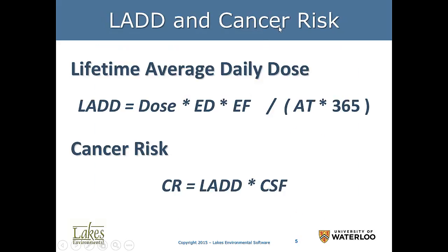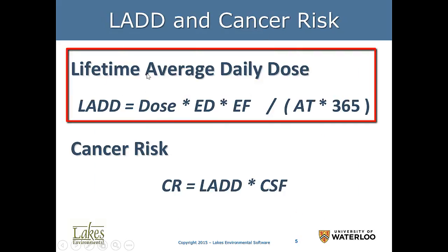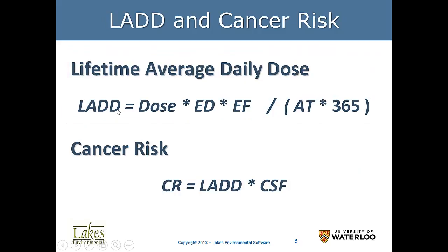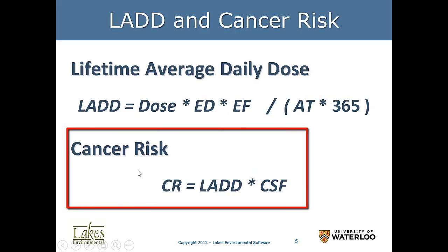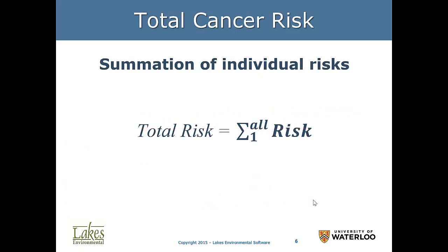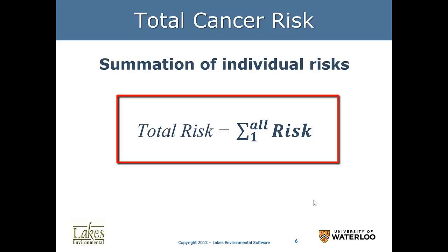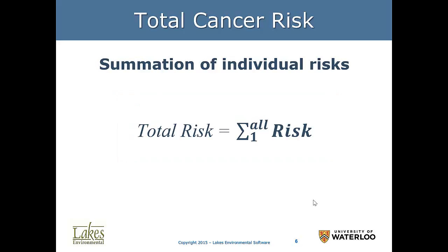When we're computing cancer risk, we compute the lifetime average daily dose, the LADD. The code will do that for us. We see the dose, exposure duration, exposure frequency, divided by the average time times 365 because we're doing the exposure frequency. The cancer risk then will be the lifetime average dose times the cancer slope factor. Once we have each one of the chemicals' cancer risk computed, we must sum all of them to see the total risk.